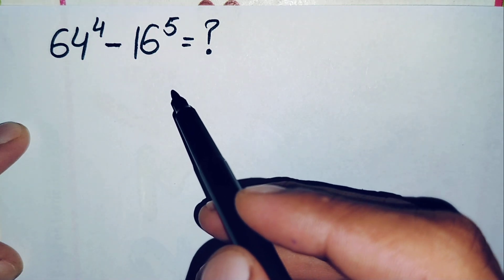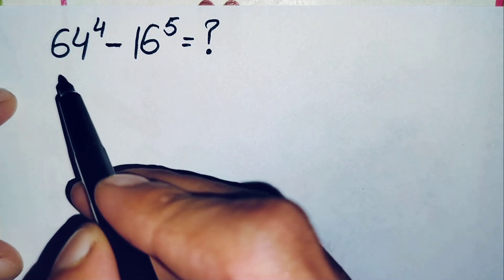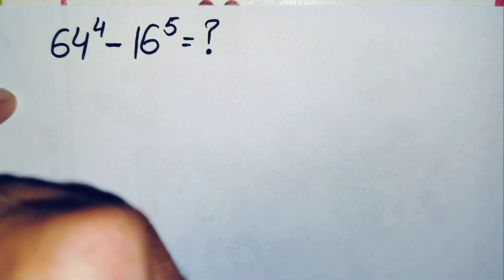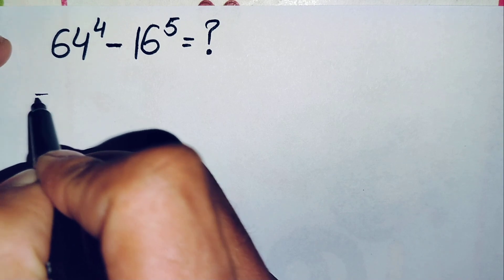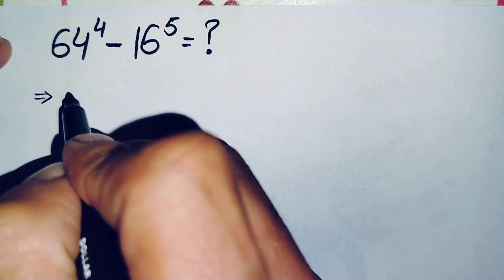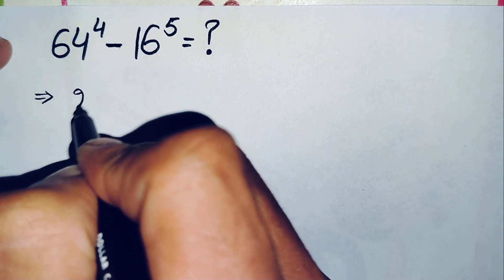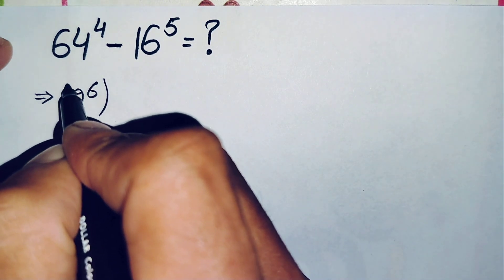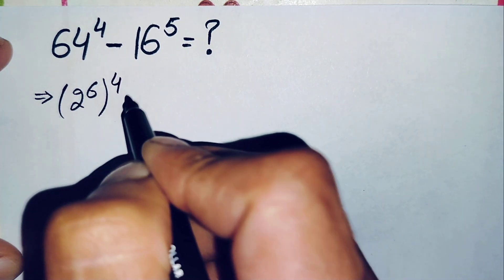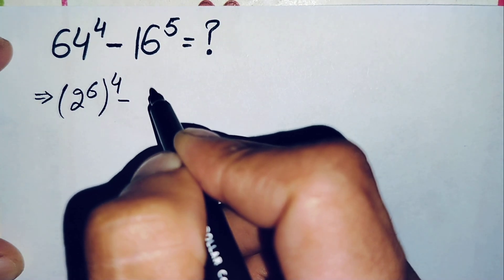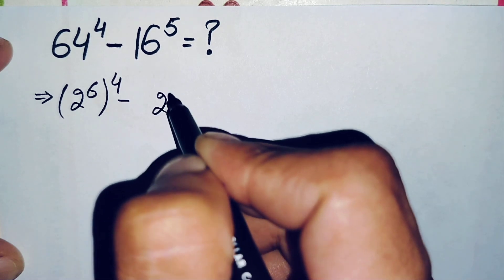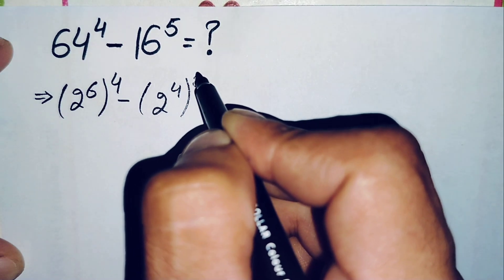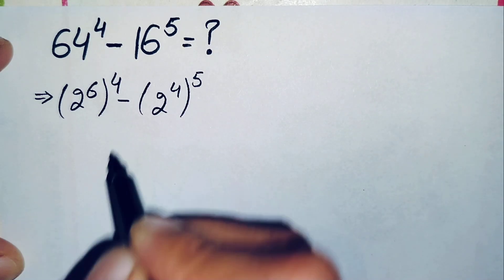First of all, we will change these two bases to their exponential form. We can write 64 as 2 raised to power 6, so this becomes 2 raised to power 6, all raised to power 4, minus, and we can write 16 as 2 raised to power 4, all raised to power 5.